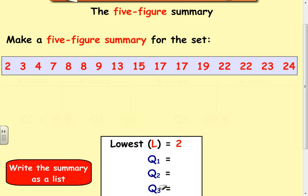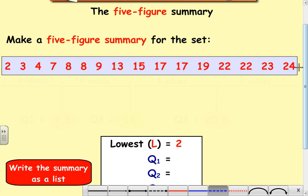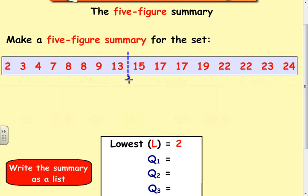Now, I usually work out Q2 first, the middle value. So counting 1, 2, 3, 4, 5, 6, 7, 8, 9, 10, 11, 12, 13, 14, 15, 16. Again, the middle number is between the 8th and 9th values, so it's going to be there. That's my Q2.